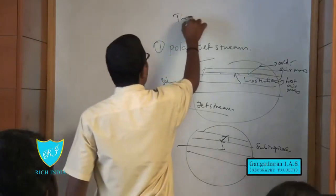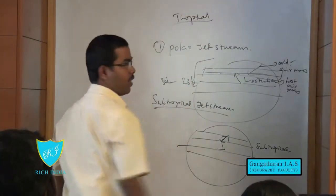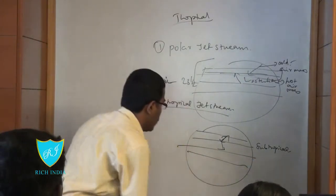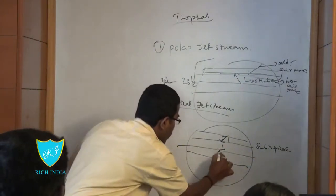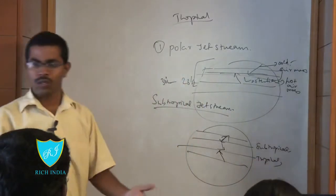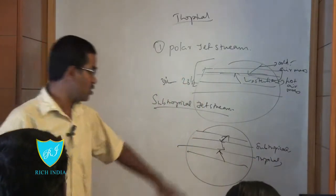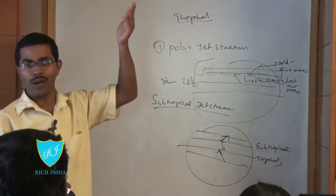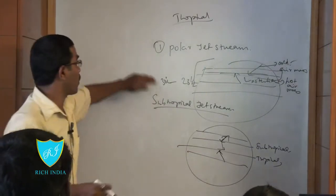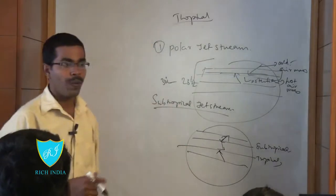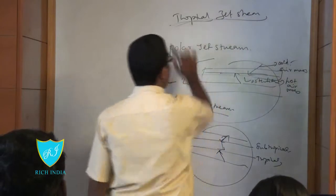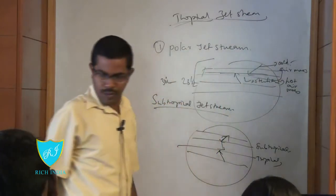Tropical refers to the convergence of both trade winds — northeast and southeast trade winds. This convergence happens at the surface. The upper air circulation at this location we may call the tropical jet stream. So these are the different types of jet streams.